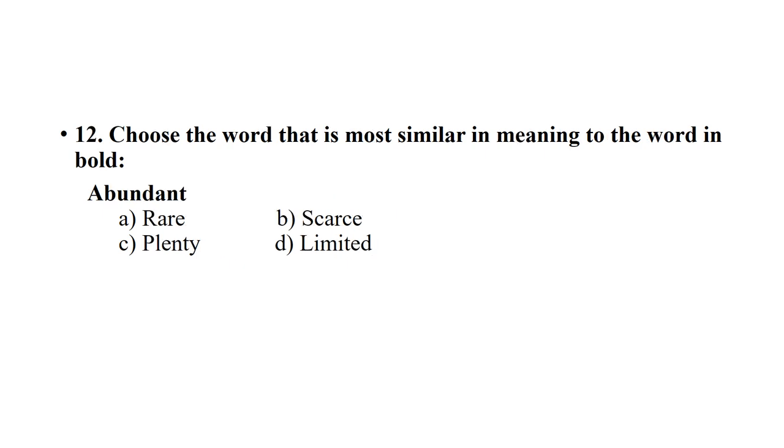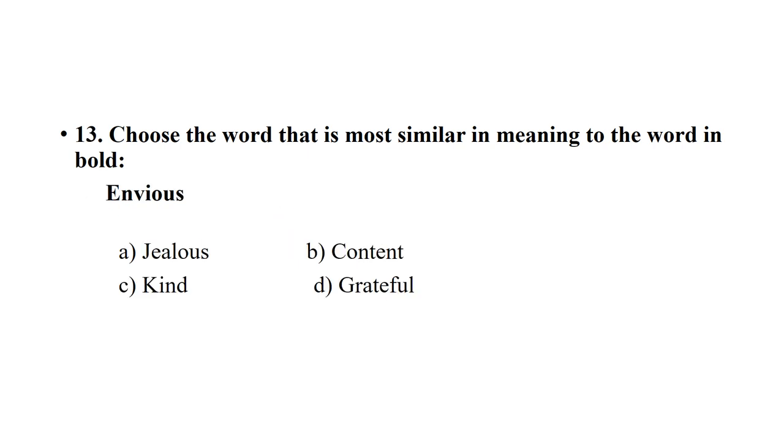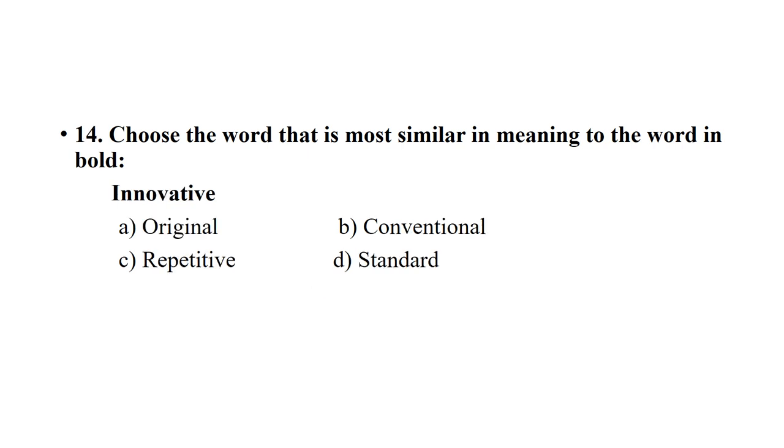Abundant means PURITMAAT. So the option is Plenty. Next is Innovative. New, Original. The correct option is A.